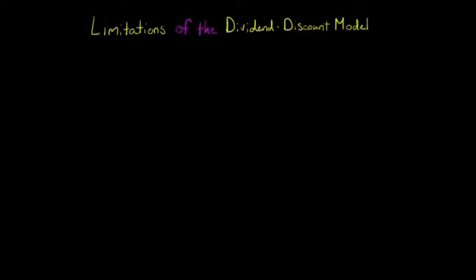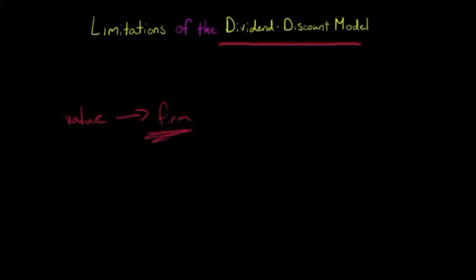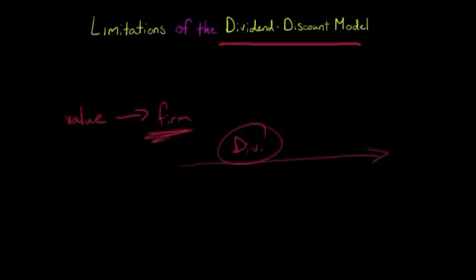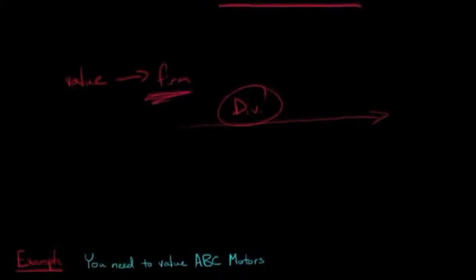We're going to go ahead and watch a video that highlights last week's class before we move into this week's class. As we discussed in the last video, the dividend discount model could be used to come up with a valuation for a firm based on the amount of dividends that we expect the firm is going to issue over time. We can value the firm as just the stream into the future of dividend payments that we will discount back to their present value. But there are a couple of issues with this — one being that it's difficult to forecast dividends correctly, and also there are several things that are under managerial discretion that will actually affect the dividend discount model.